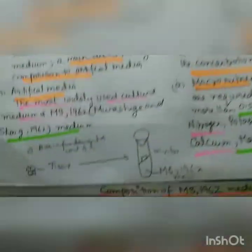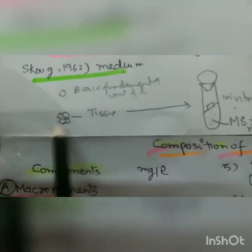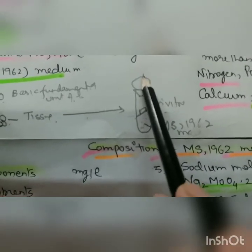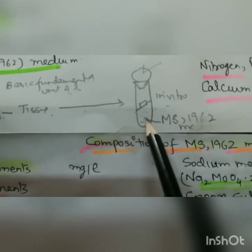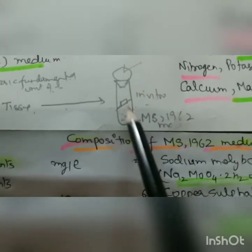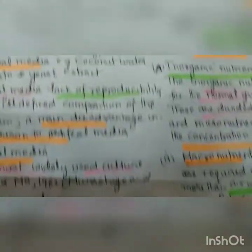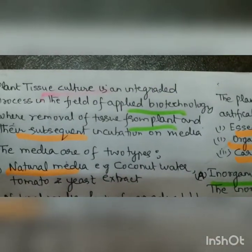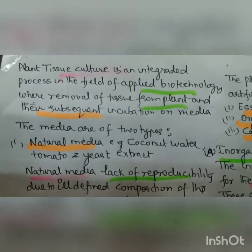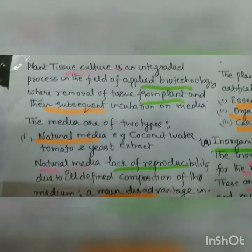Now moving to plant tissue culture. A cell is the basic fundamental unit of life, and a group of cells is called tissue. When tissue is inoculated on a medium — in a test tube with cotton plugs for gaseous exchange — containing MS medium, and the inoculation of tissue in the form of leaf, root, or stem, that is called tissue culture. Plant tissue culture is an integrated process in applied biotechnology involving removal of tissue from a plant and its subsequent incubation on media.